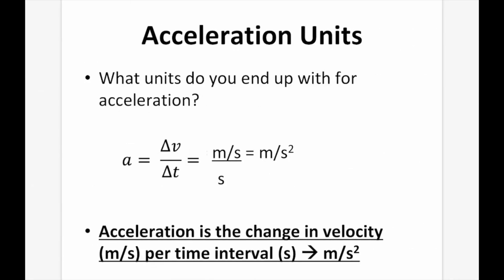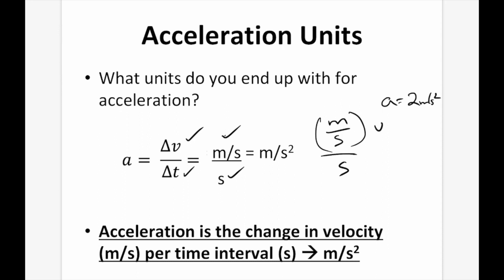For acceleration units, you have change in velocity on top — meters per second — and change in time on the bottom, in seconds, giving meters per second squared. That means how fast are we changing in terms of meters per second every second. For example, an acceleration of 2 m/s² means the velocity increases by 2 m/s every second. After two seconds of acceleration, the final velocity would be 4 m/s — 2 m/s after the first second, and 4 m/s after the second second.